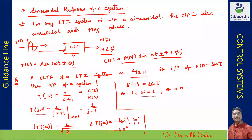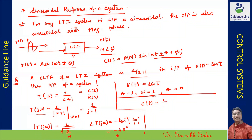So the output c(t) can be found as: A = 1, magnitude M = 1/√2, and phase φ = −45°. Therefore, c(t) = (1/√2)·sin(t − 45°). So when a sinusoidal input is applied to an LTI system, the output is also sinusoidal with a change in magnitude and phase.